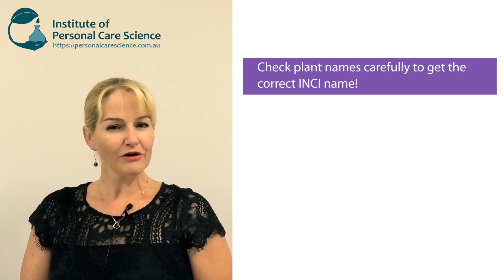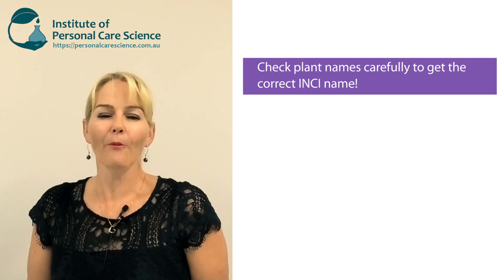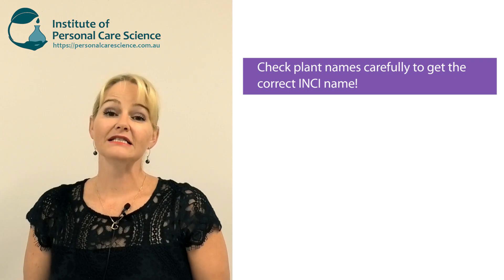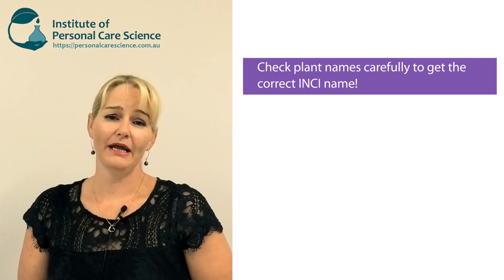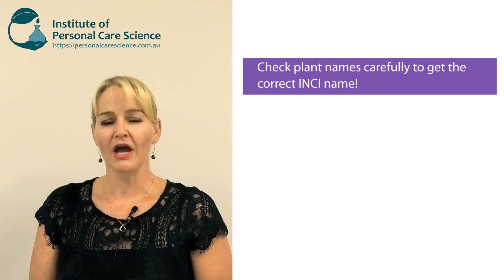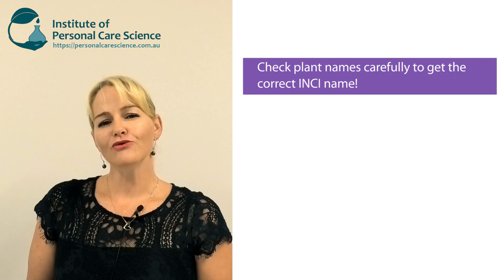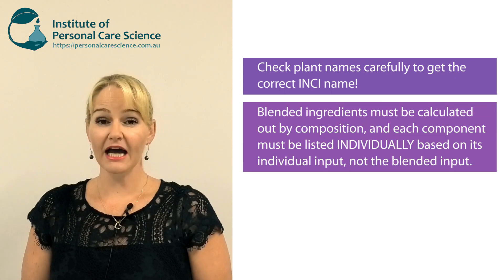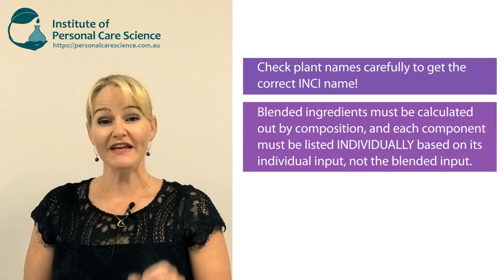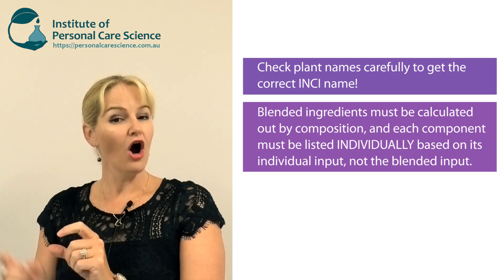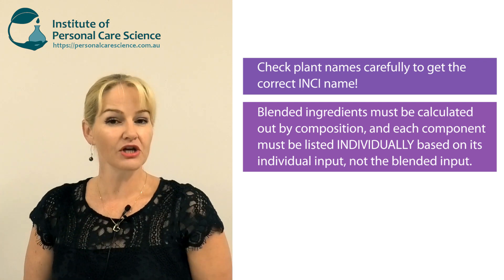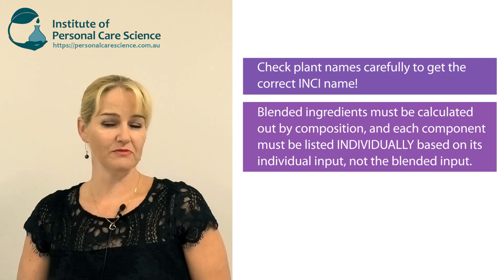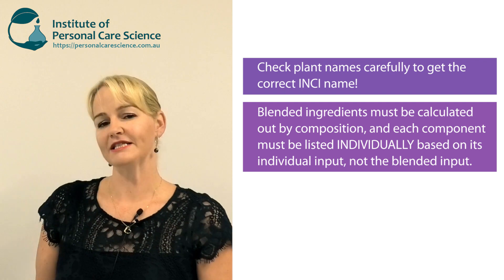A couple of final tips to help make sure you get your ingredient list right — and these are some of the common errors I see people make. Where you're using blended ingredients, you actually need to calculate out the individual composition of each material to determine exactly how much of each material is present.